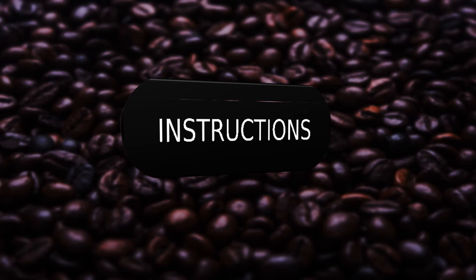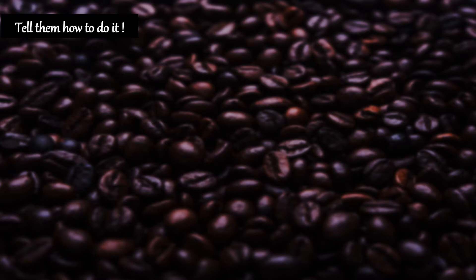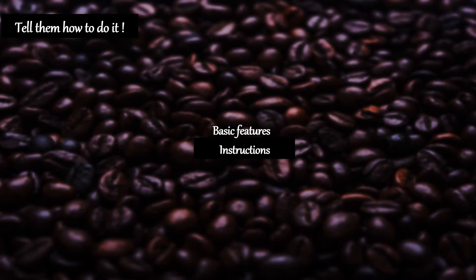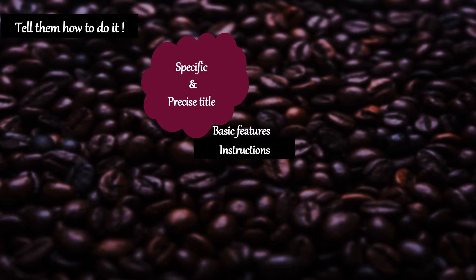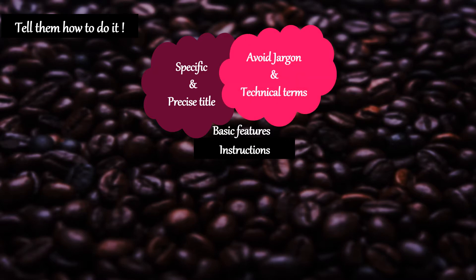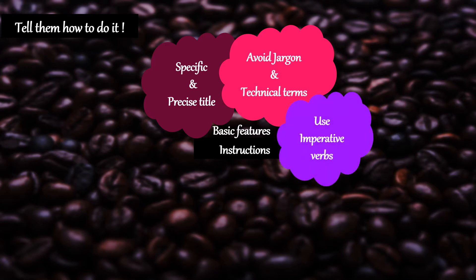Today's topic is on instructions. When you need to tell someone how to do something, you give a set of instructions. What are the basic features of instructions? First of all, when you need to write instructions, you have to give a specific title. You need to be very precise, meaning you have to make use of the word 'instructions' in your title. Next, avoid jargon and technical terms. It is important to use imperative verbs, meaning every statement should begin with a root verb.